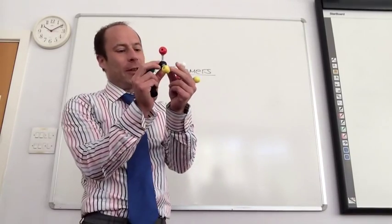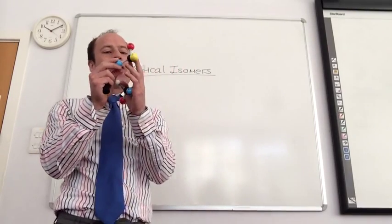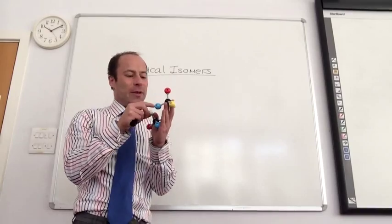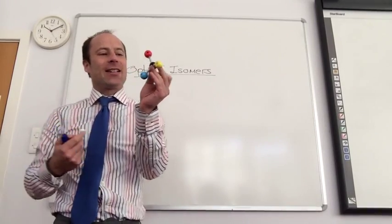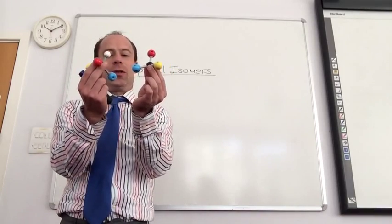So I've got a carbon attached to four different groups. Doesn't matter what the groups are, they're just four different groups here. If that's the case and I reflect it in a mirror, like so, it would look more like that.